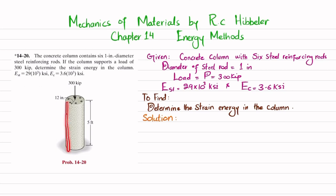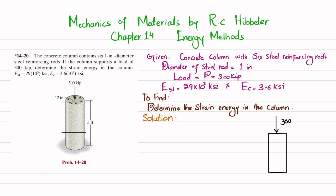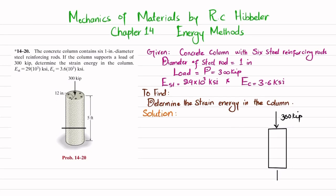You can see this is a concrete column that consists of six one-inch steel rods, and the load it supports is 300 kips. We have to find the strain energy in this column. First step: cut this column and draw the free body diagram. This is the frontal view of the column with an axial load of 300 kips acting on it. Some of the load is taken by concrete and some by the steel reinforcing rods, so the total load equals P_concrete plus P_steel.